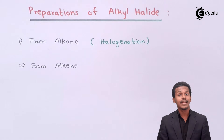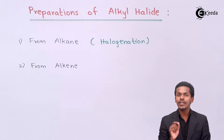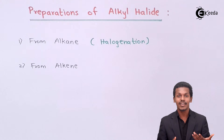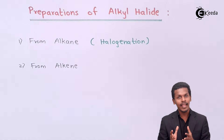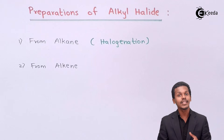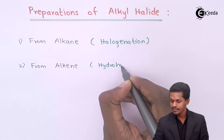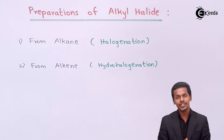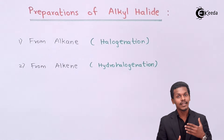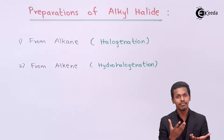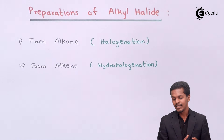The next method is preparing alkyl halides from alkenes. Alkenes consist of a carbon-carbon double bond. If we add a hydrohalogen — for example HX, which could be HCl, HBr, or HI — this process of adding a hydrohalogen to a carbon-carbon double bond is known as hydrohalogenation. This is an addition reaction where the carbon-carbon double bond breaks and we obtain a desired alkyl halide.